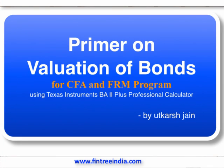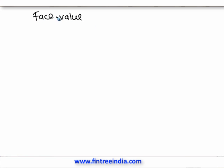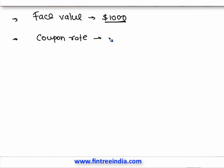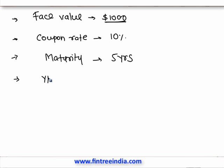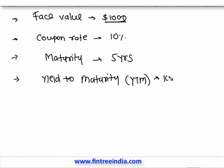We will get ourselves introduced to multiple terms. First term is the face value. Most of the questions you would see for valuation of debt, the face value would be $1,000. This face value will have two usages, which I will come to later. Second term is the coupon rate — let me assume a coupon rate of 10%. Third term is maturity — let's say 5 years. And the fourth term is yield to maturity, which I'll simply call YTM. Let me keep YTM as 10% for now.